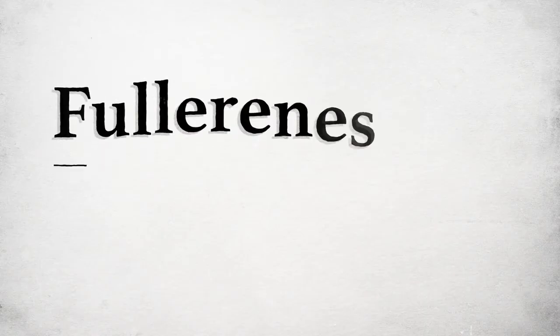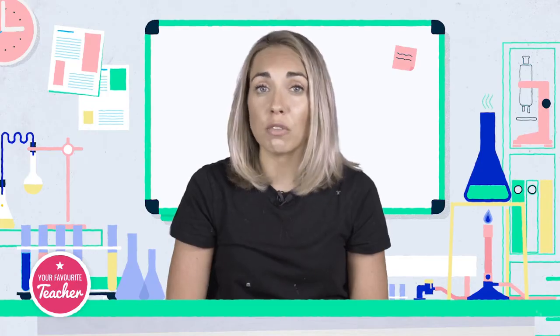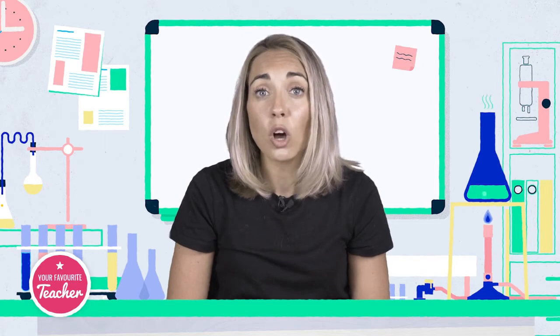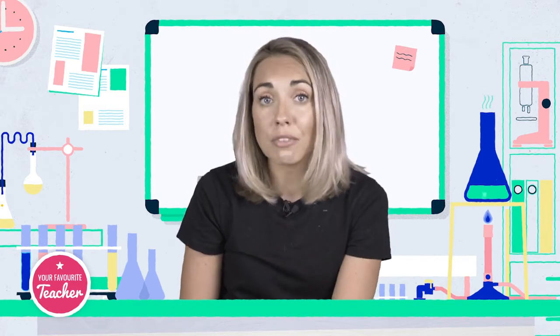The last is fullerenes. Fullerenes are molecules made of carbon atoms arranged in hexagonal rings. These rings connect with three covalent bonds. These bonds have varying shapes and form hollow structures. Fullerenes may also contain rings with five or seven carbons.